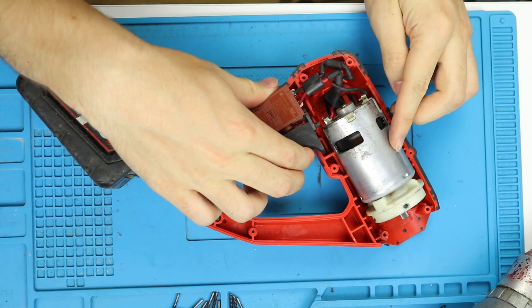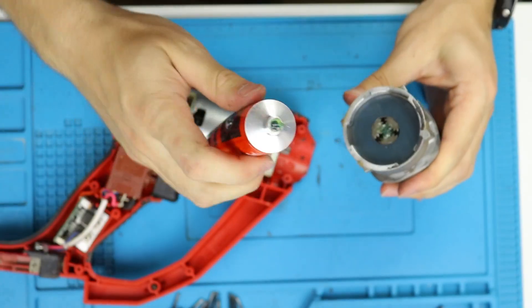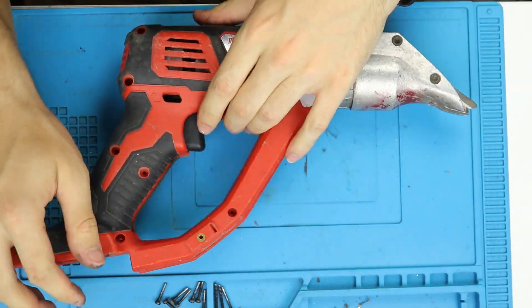With that removed, we can see the motor is spinning now. With some fresh grease applied, let's reassemble it.